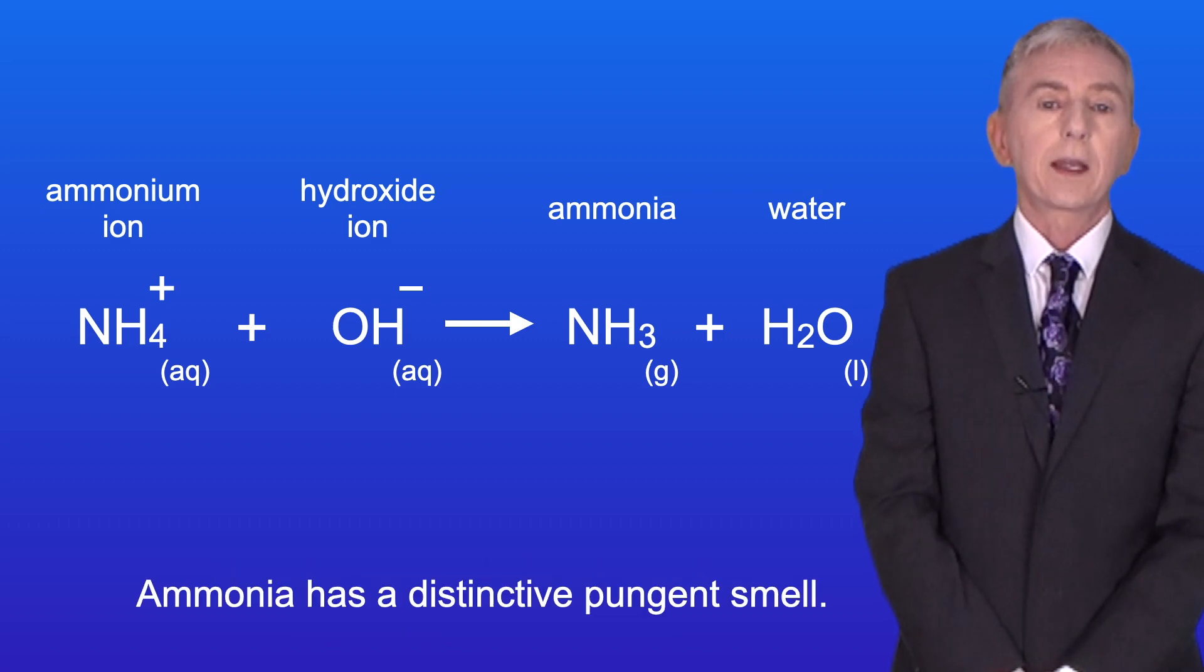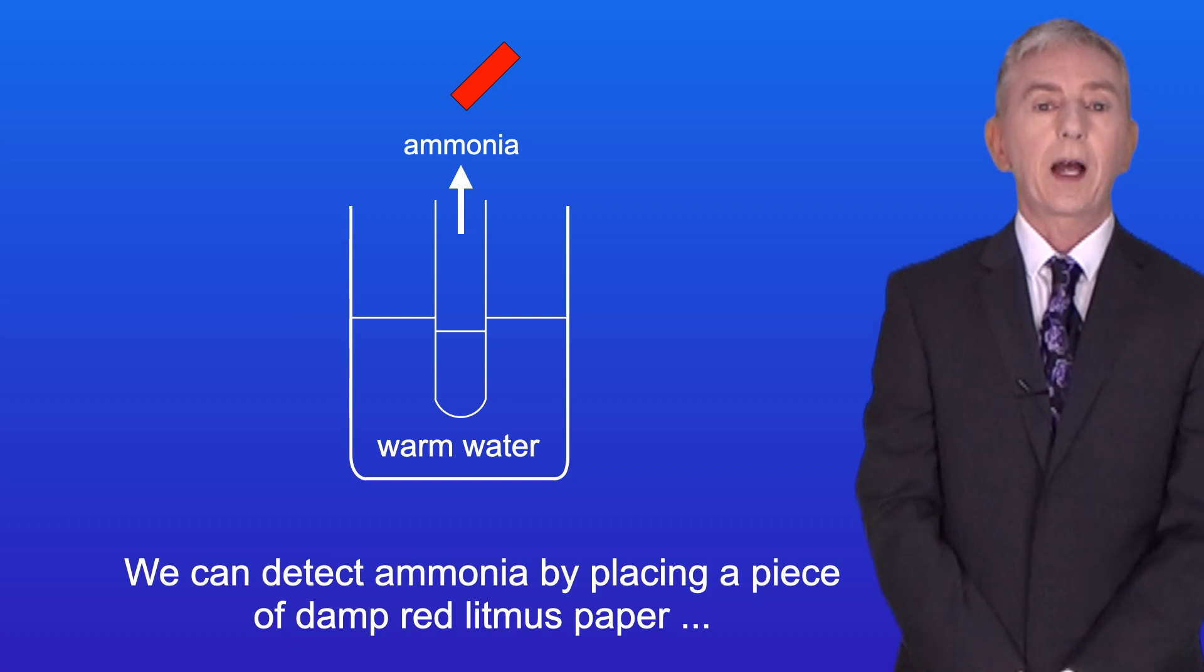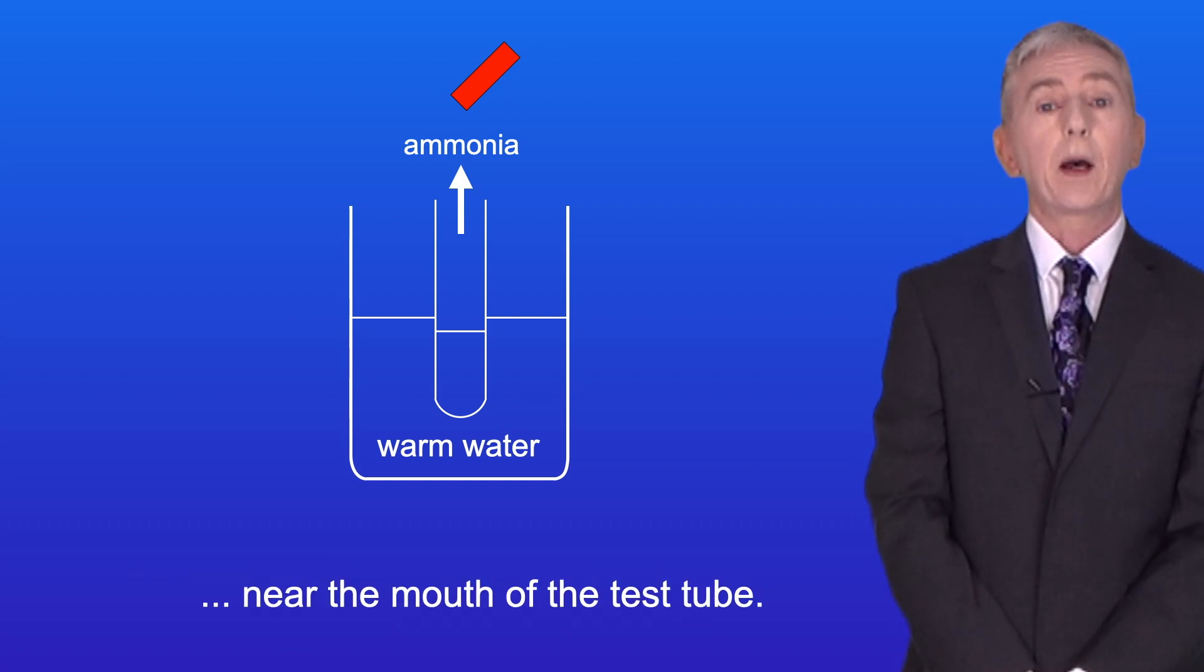Now, ammonia has a distinctive pungent smell. We can detect ammonia by placing a piece of damp red litmus paper near the mouth of the test tube.